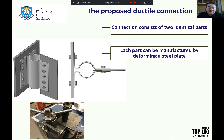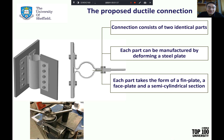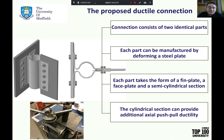Each part can be manufactured by deforming a steel plate. This figure shows how we create our model-scale connection specimen. This procedure can be reproduced in practical production to produce full-scale connections. Each part of the ductile connection takes the form of a thin plate, a faceplate, and a semi-cylindrical section. The function of the cylindrical section is to provide additional axial push-pull ductility by allowing the thin plate to move towards and away from the faceplate.